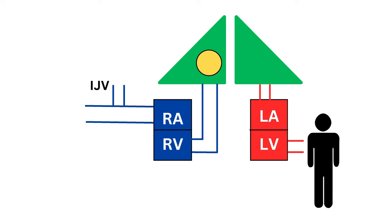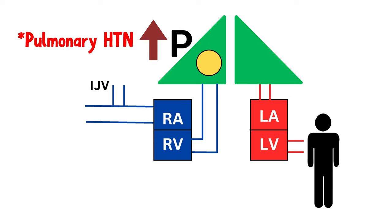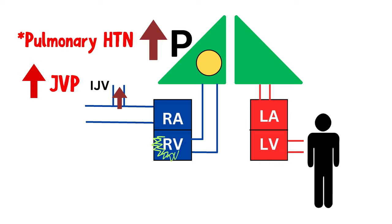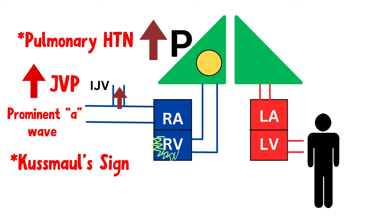A massive blood clot can rapidly increase the pressure in the pulmonary vasculature, leading to pulmonary hypertension. This pressure can back up into your right ventricle and cause right ventricular strain. As a result, blood can back up into the venous system and when that happens, it can back up to the jugular vein, increasing the jugular venous pressure and producing a prominent A wave. Kussmaul's sign can happen as a result.